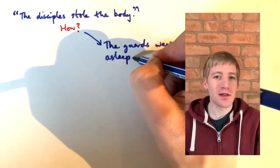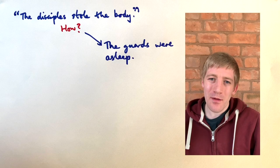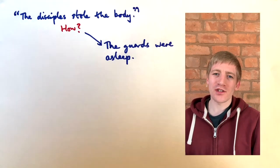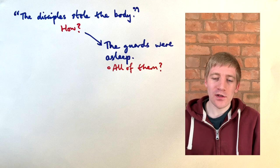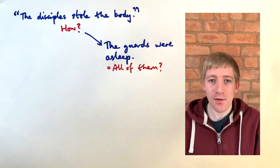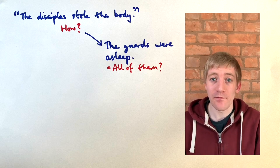Why I find this theory so hard to believe is because if there were a minimum of four guards what are the chances of all four guards falling asleep at the same time even though that was something that there would have been a severe punishment for in the Roman guard?